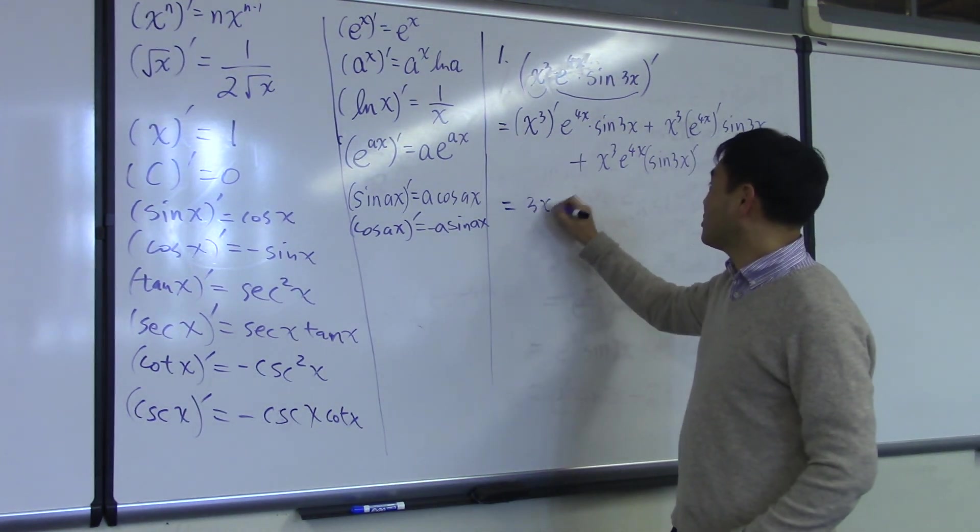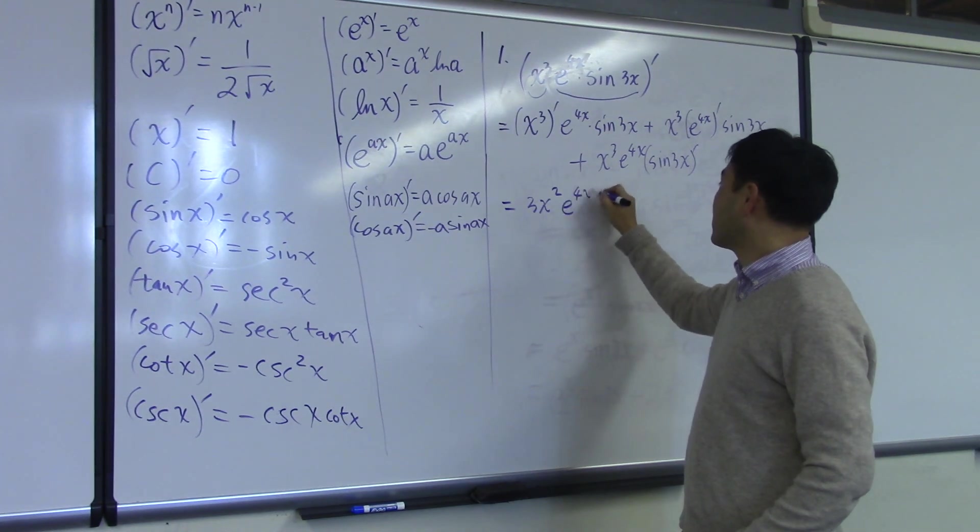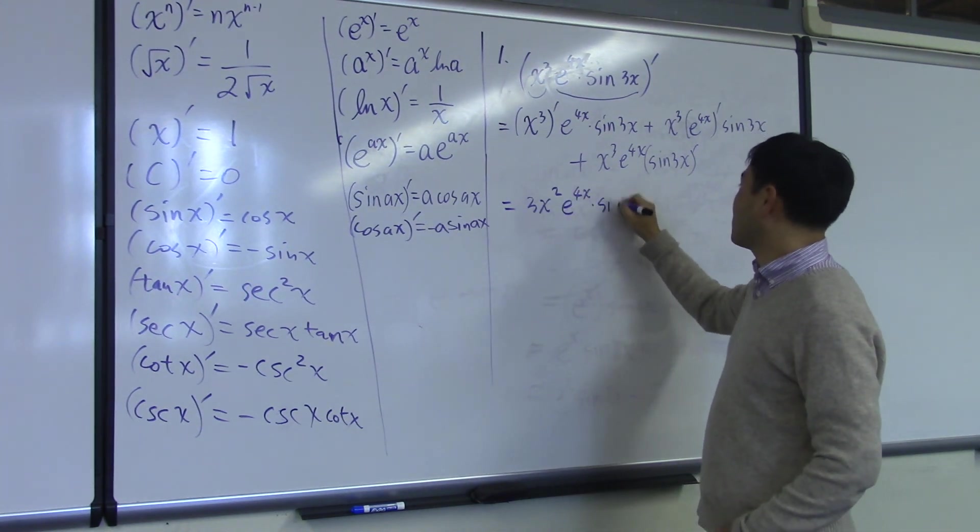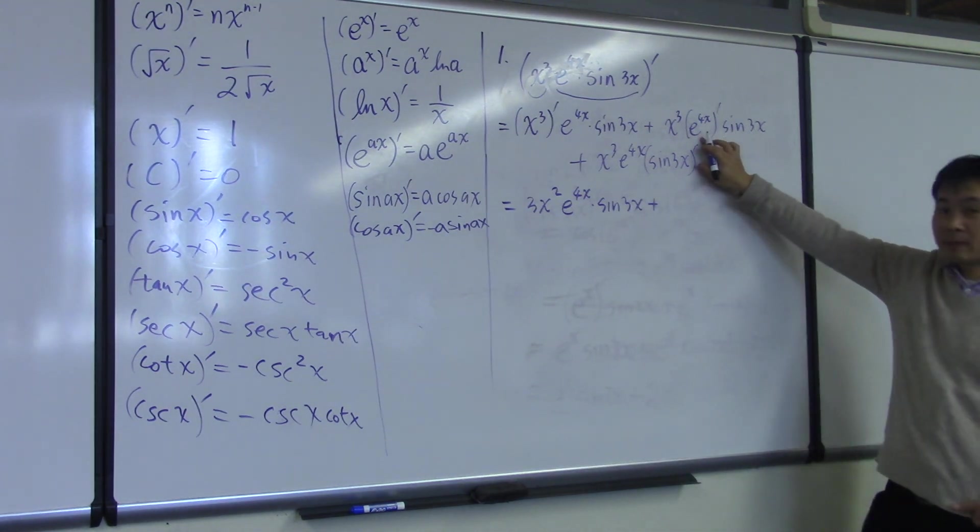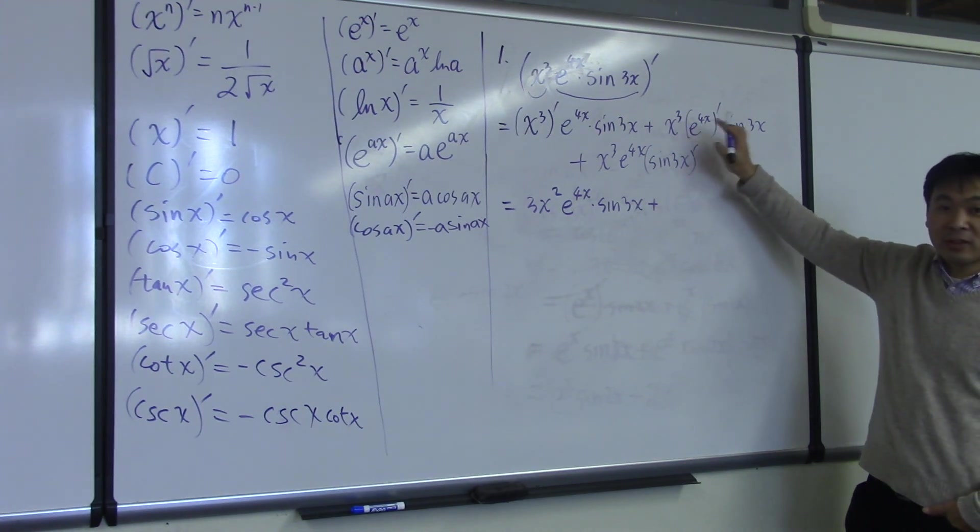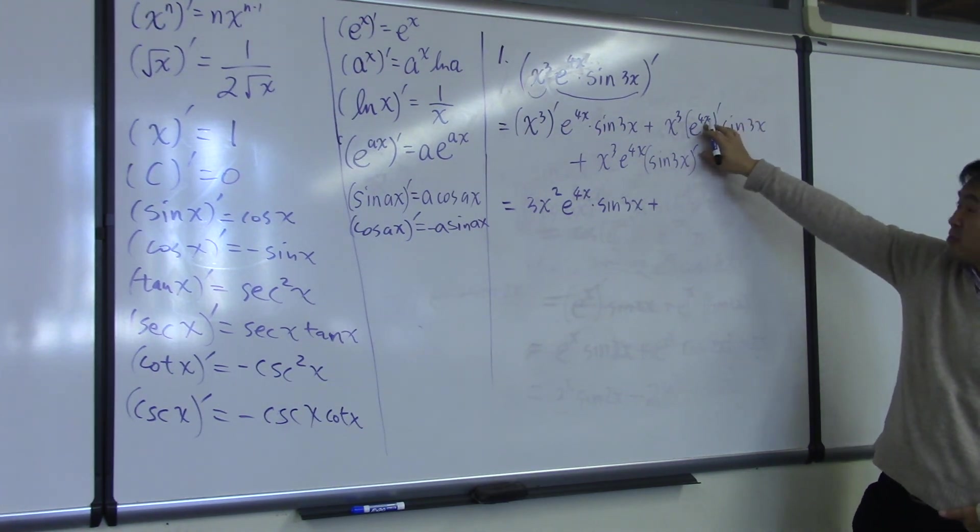This is 3x squared e to 4x sine 3x. This one, what's the derivative of this? 4 e to 4x, right? So if you differentiate 4x, it's 4, so that comes in front.